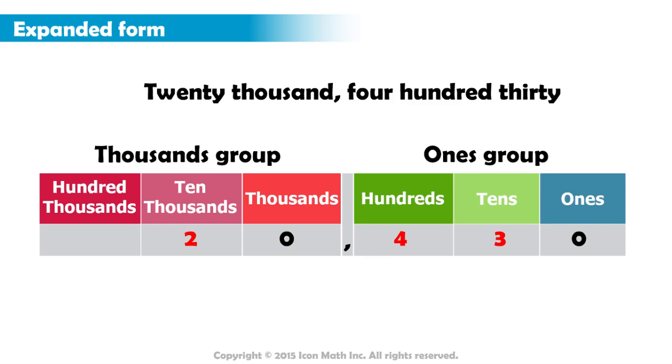As you can see, we have three digits that are not zero: 2, 4, and 3. Each digit represents a specific value according to its place value. The zeros represent zero amounts, so we ignored them.